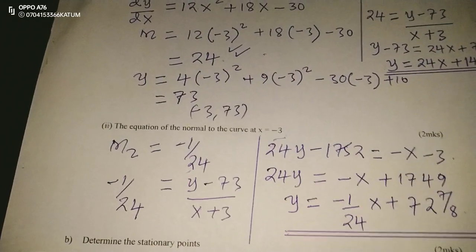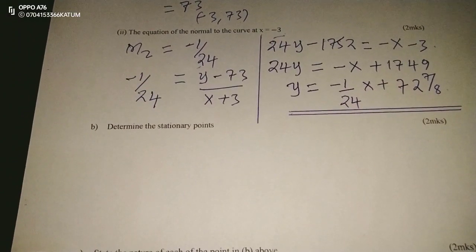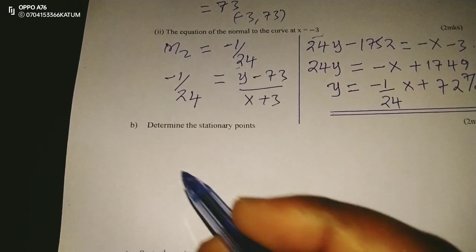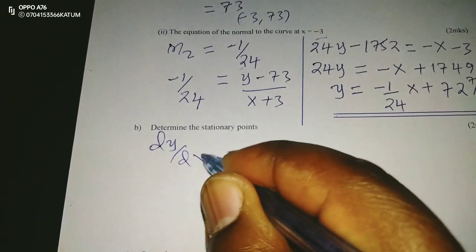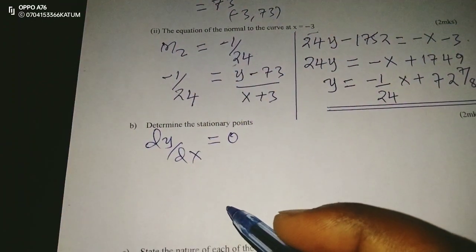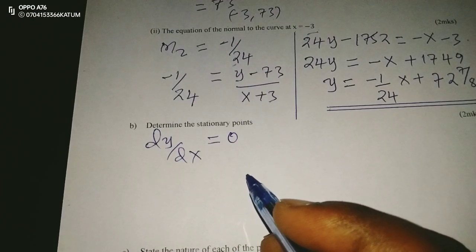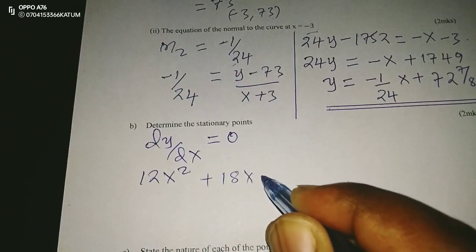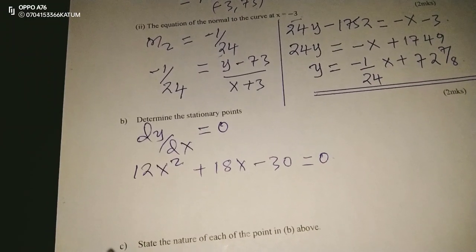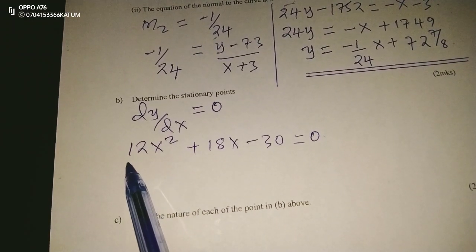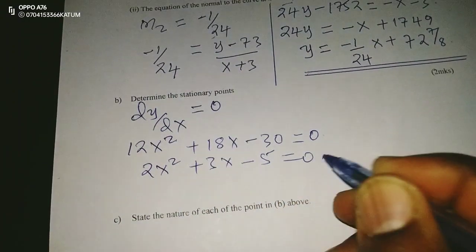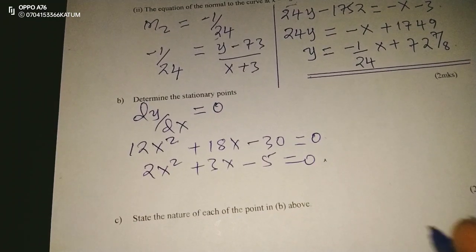Next we determine the stationary points, which are also called the turning points of a curve. At stationary points the gradient equals 0, so we set dy/dx = 0. That gives us 12x² + 18x − 30 = 0. We can see that 6 is a common factor, so dividing through by 6 gives 2x² + 3x − 5 = 0, a simpler equation to solve.